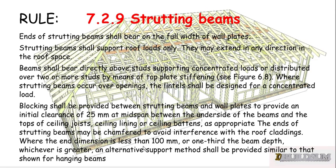The rules for strutting beams: the ends of a strutting beam shall bear on the full width of the wall plates. Strutting beams shall support roof loads only and may extend in any direction in the roof space. That's the main difference between your strutting beam and your combined hanging strutting and counter strutting beams — the loads that they carry.